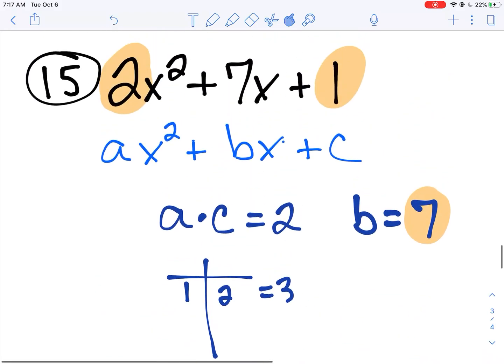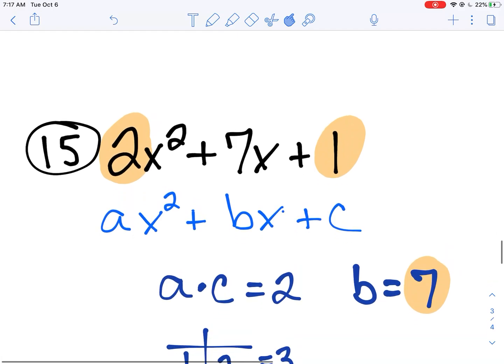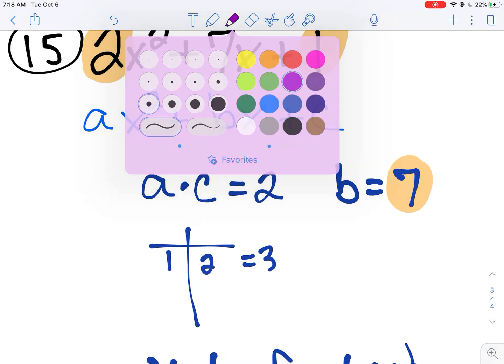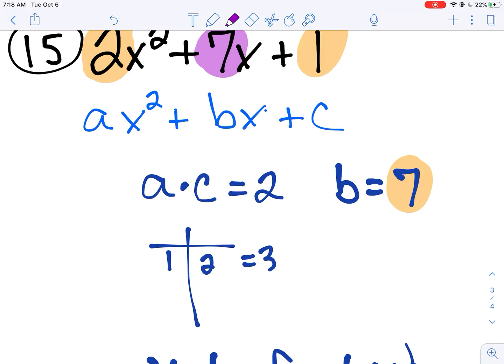And again, why? Because when we multiplied a and c in this case, 2 times 1, we got 2. We couldn't find any factors of 2 that would add up to b here. Remember, b is that 7, that coefficient right here. We could not find any factors of 2 and 1 that added up to 7.